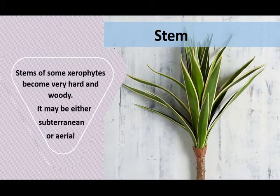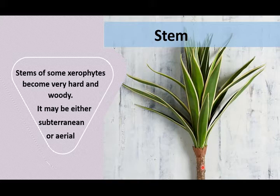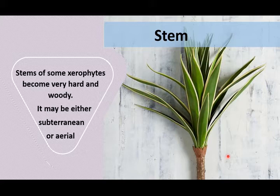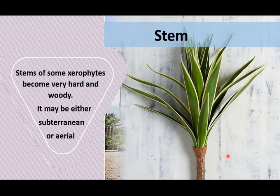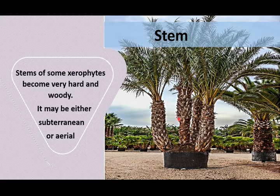In some xerophytes, the stem becomes very hard and woody. In a common ornamental xerophyte, the stem is subterranean — it remains under the soil and only the shoot system emerges out — and though underground, it is hard and woody. In date palms and toddy palms, the hard and woody stem is aerial.